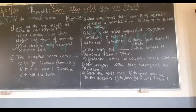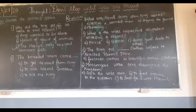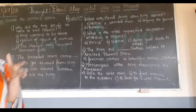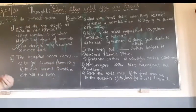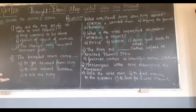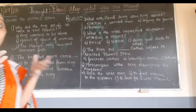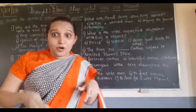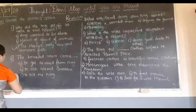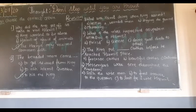Next: the bearded man came. For what reason did he come? To get a reward from the king? No. To ask the hermit a question? No. He went to kill the king. So the answer is: to kill the king.